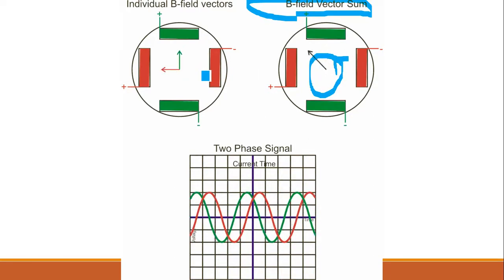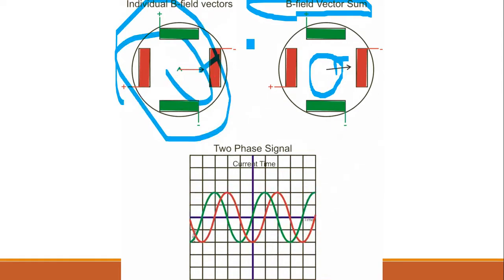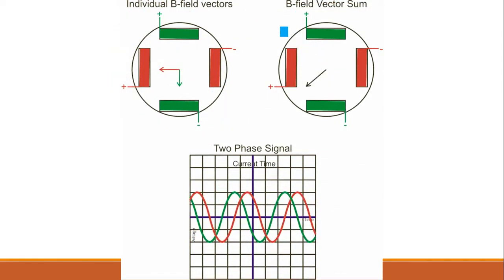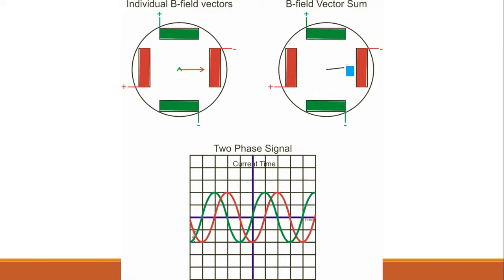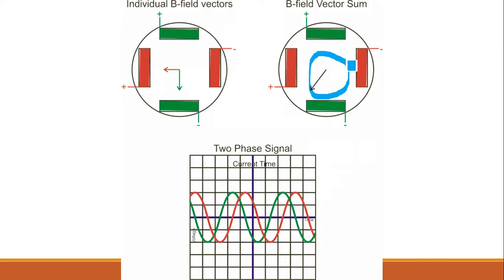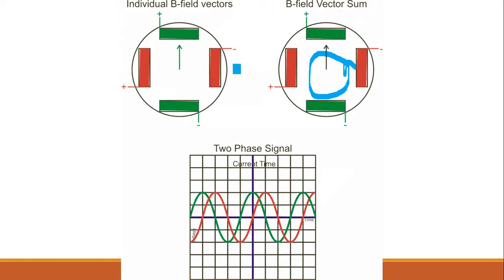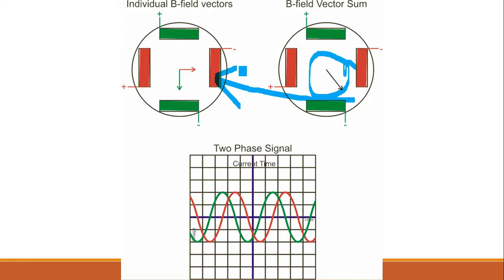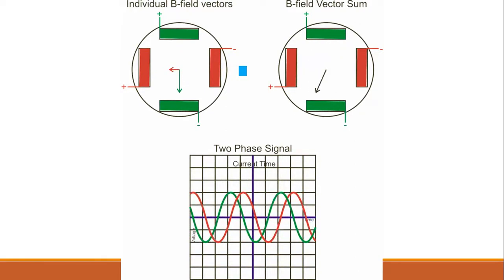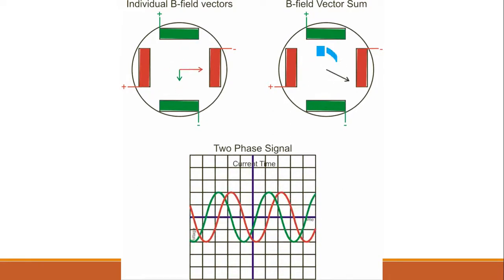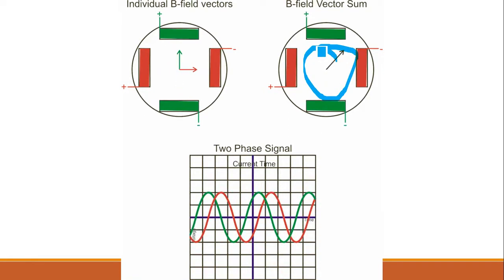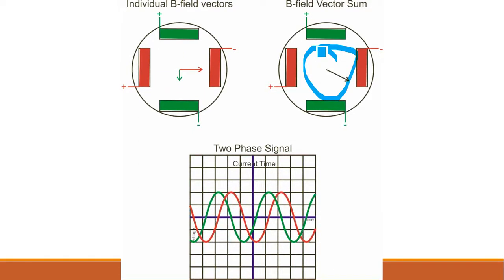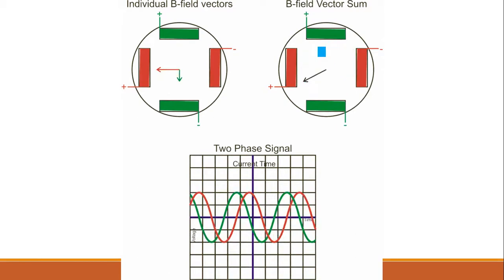The resultant of the two fluxes effectively creates a revolving magnetic field. You can see the magnetic field is revolving — the two conductor vectors are combined and the resultant vector is moving through the stator. This is known as the revolving field in the stator of the single-phase motor.